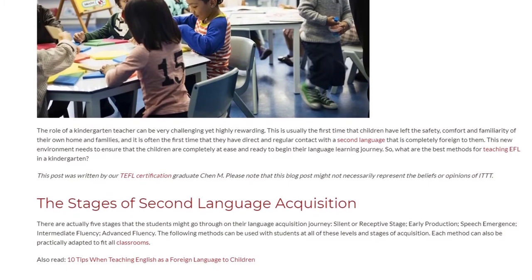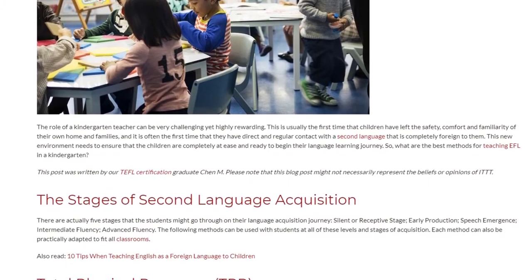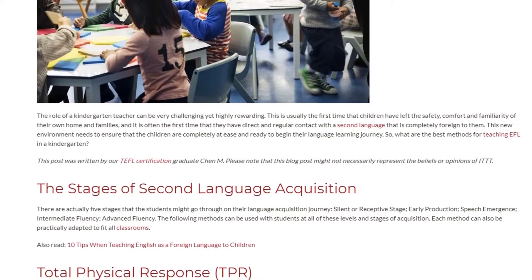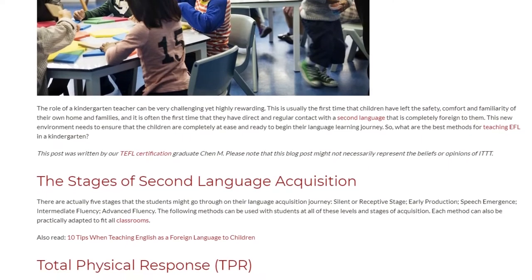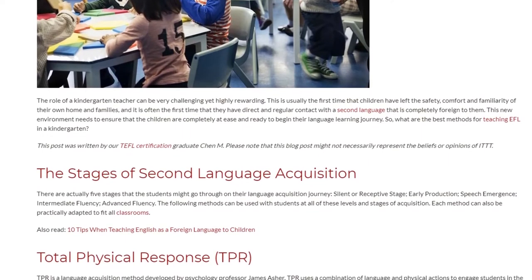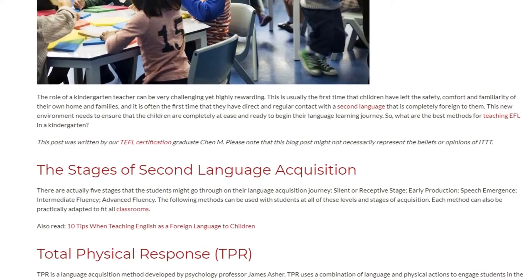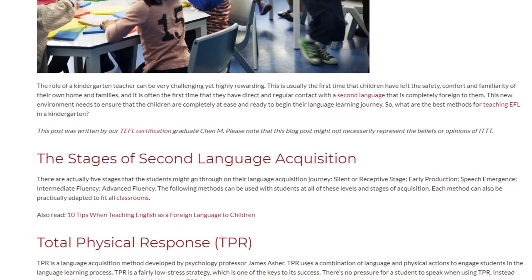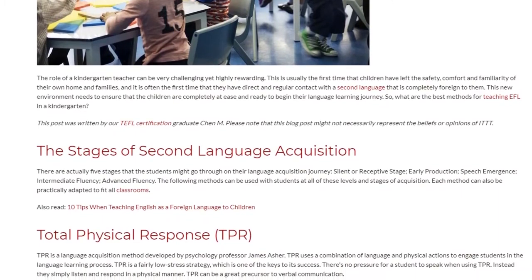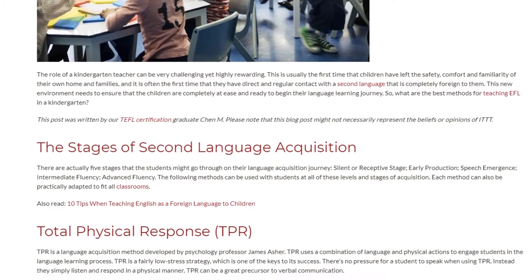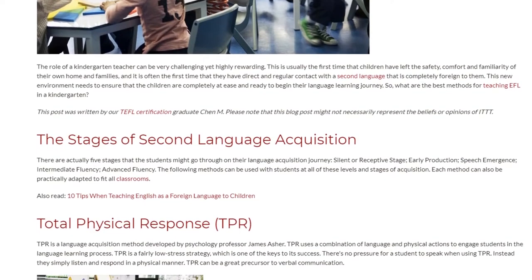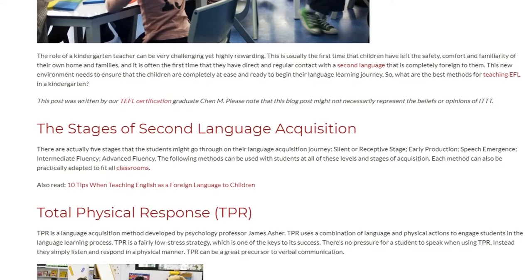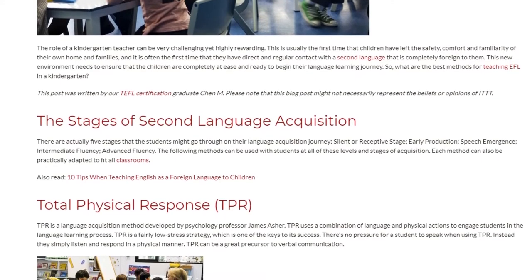The Stages of Second Language Acquisition. There are actually five stages that the students might go through on their language acquisition journey: silent or receptive stage, early production, speech emergence, intermediate fluency, and advanced fluency. The following methods can be used with students at all of these levels and stages of acquisition.